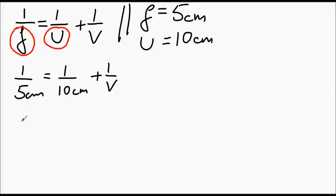1 over 5 centimeters is going to give you 0.2 on the calculator, and the unit is 1 over centimeters. 1 divided by 10 is going to be 0.1, unit is 1 over centimeters, plus 1 over V.